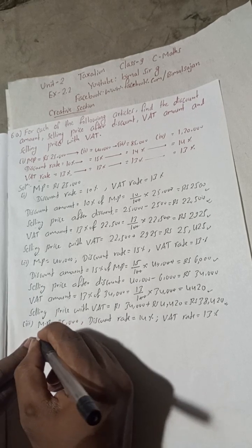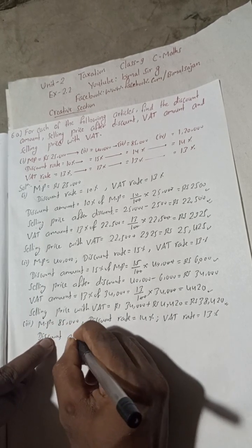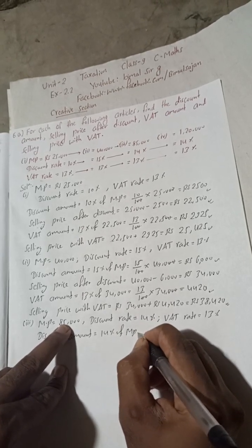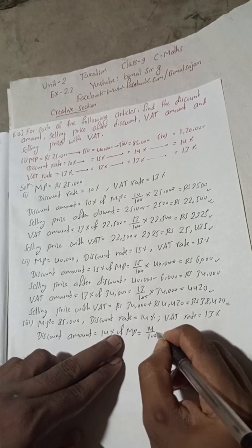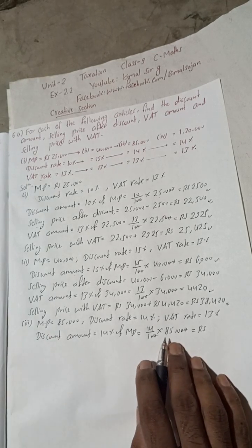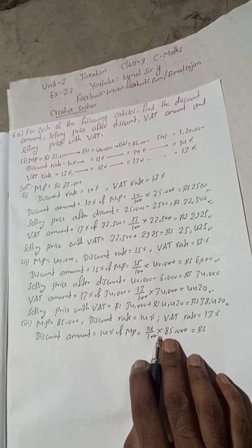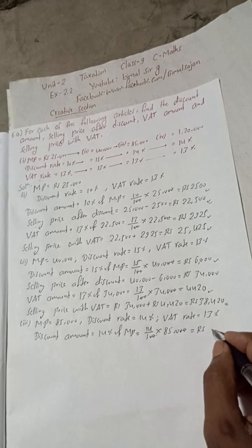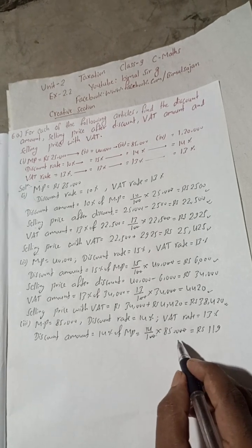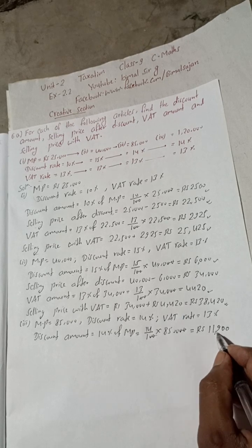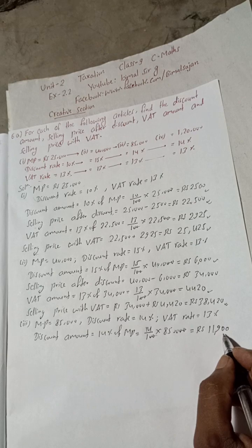We have to find the discount amount. Discount amount equals 14% of MP: 14 divided by 100, multiplied by 85,000. Cancel two zeros: 85 multiplied by 14 equals 1,190. Adding the remaining zero gives Rs 11,900 as our discount amount.